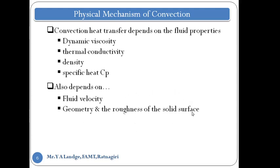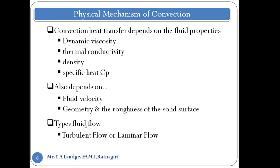Convection also depends on the geometry and roughness of the solid surface. The geometry is an important part, and the roughness of the solid surface can change the pattern of flow — it may be laminar or it may be turbulent. The type of fluid flow, whether laminar or turbulent, also affects the heat transfer rate. So the key factors are: fluid properties, geometry, velocity, and the type of fluid flow.